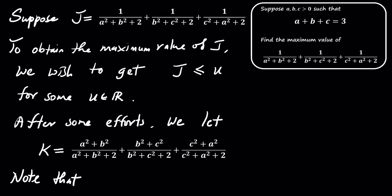With this, we note that K plus 2 times J equals 3. Now, let's try to find a lower bound for K and use it to get an upper bound for J.